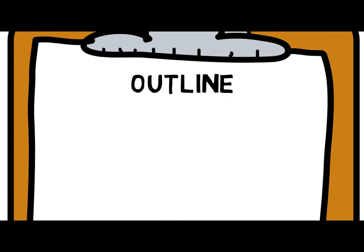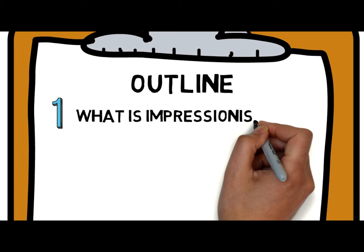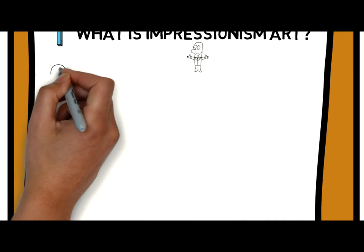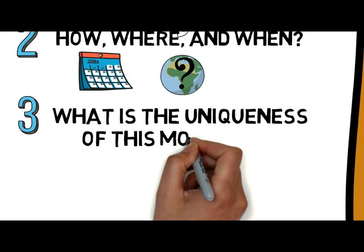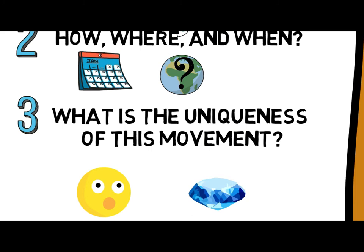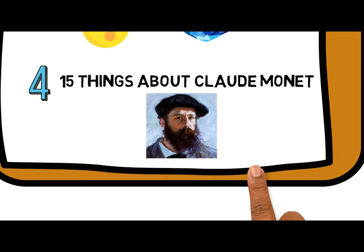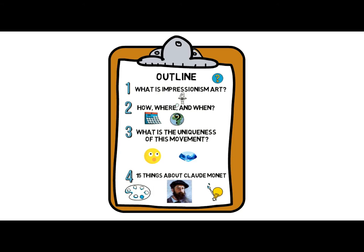Outline: Impressionism paintings are among the most loved and celebrated artworks of all time. But what is Impressionism? What are the characteristics of this movement? How, where, and when did it start? How does Impressionism differ from other art movements, or what is its uniqueness? And we will also cover 15 things you didn't know about Claude Monet. We will tackle all of this one by one so that we can understand what Impressionism is and further develop our knowledge about appreciating artwork.